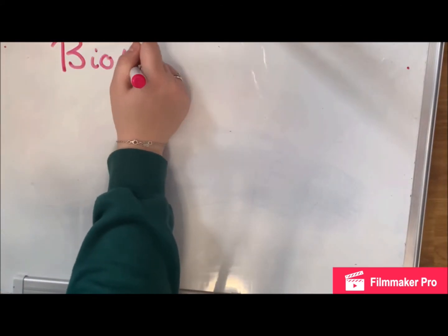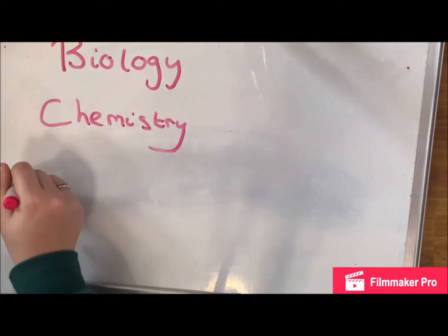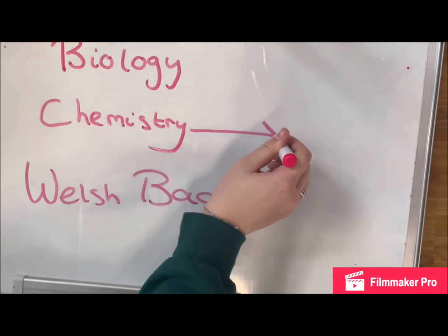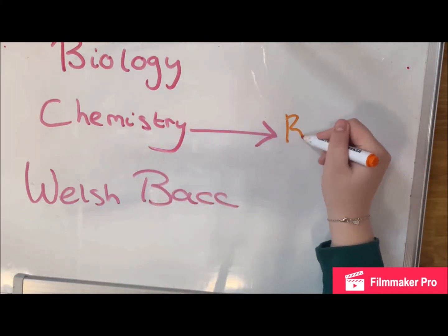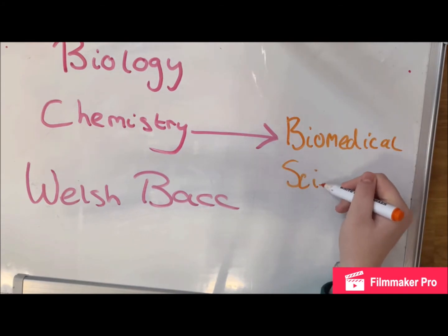So after my GCSEs I went to a local sixth form and decided to do biology and chemistry A-level and the Welsh Baccalaureate. I chose these subjects because I knew that I wanted to study biomedical sciences at a university, just not which university.